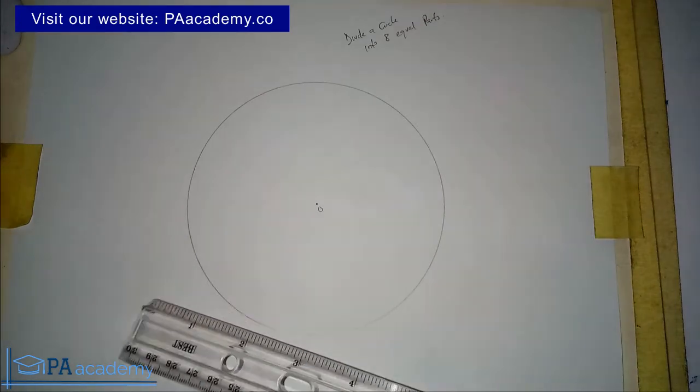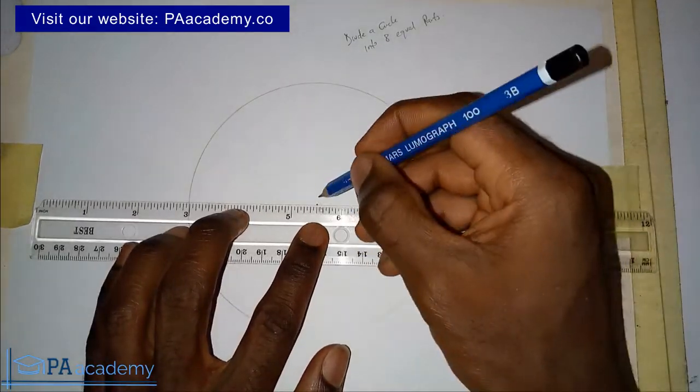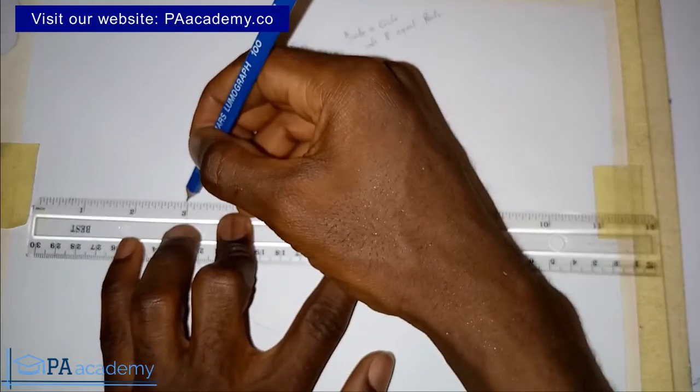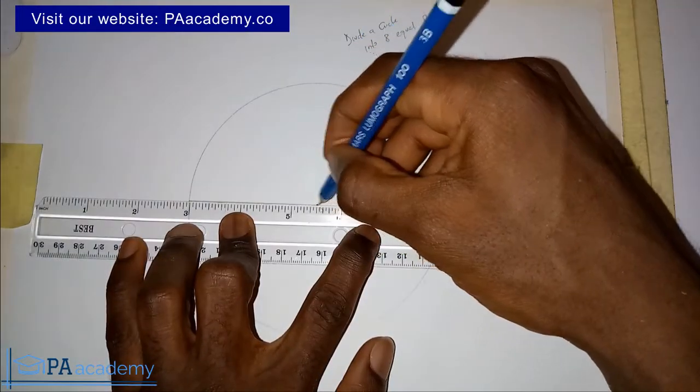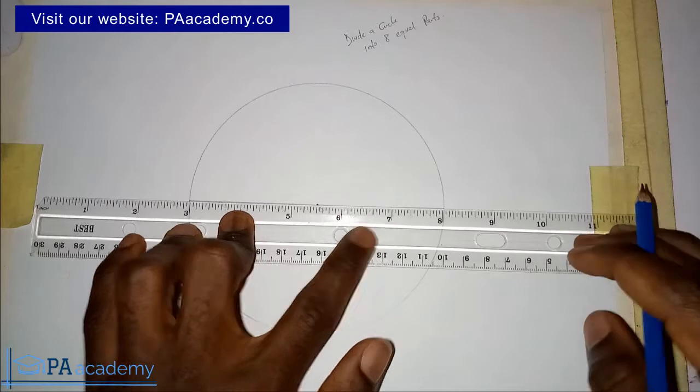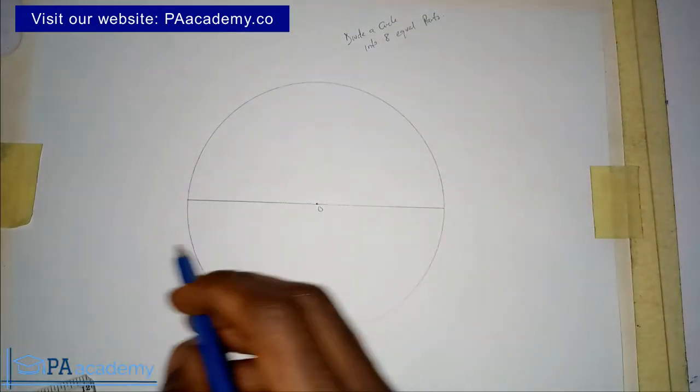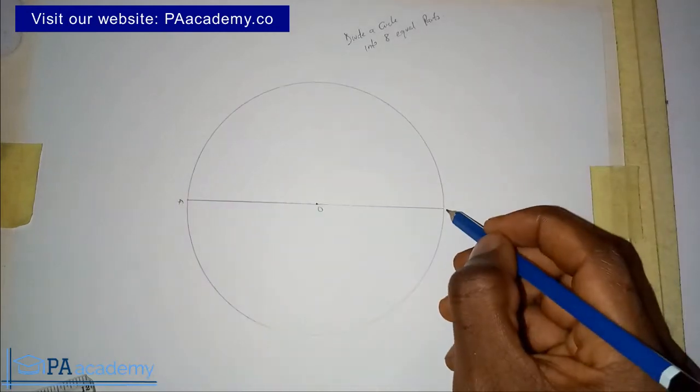The diameter is from one part of the circumference which passes through the center to the opposite side of the circumference from where you started. Let me call this point A and then point B. So we have our diameter AB.